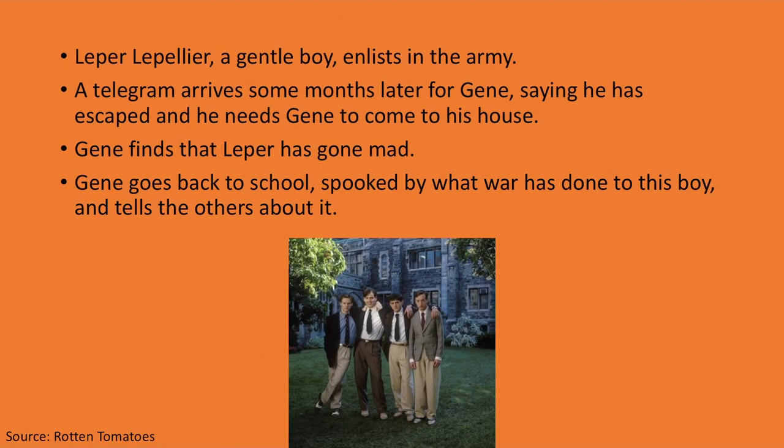Leper Lepelier is a gentle boy and another boarder at the school who does enlist in the army. Months later, a telegram arrives for Gene saying that Leper has escaped from the army and needs Gene to come to his house. Gene visits Leper at home and finds that he has gone mad — suffering some form of mental instability, possibly post-traumatic stress from what he experienced in the war. Gene, disturbed by what war has done to Leper, goes back to school and tells the others.